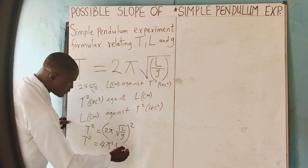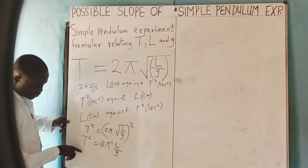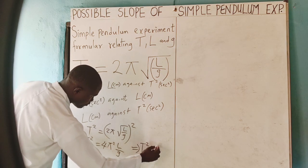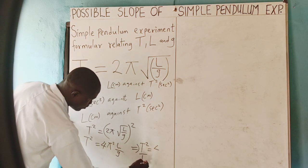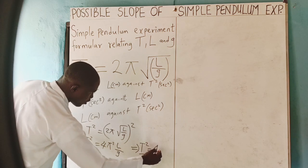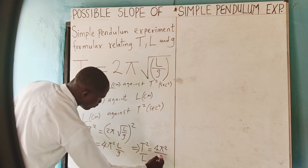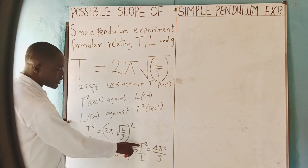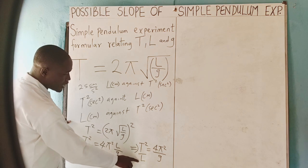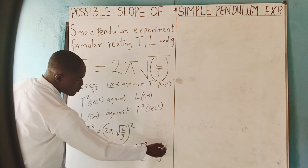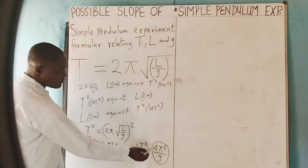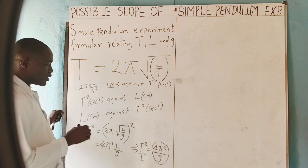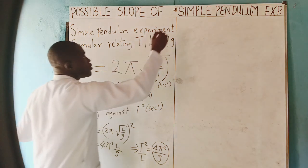From T² = 4π²L/g, we rearrange to get T²/L = 4π²/g. So you can see that if you are asked to plot the graph of T squared against L, the slope will be equivalent to 4π² over g.